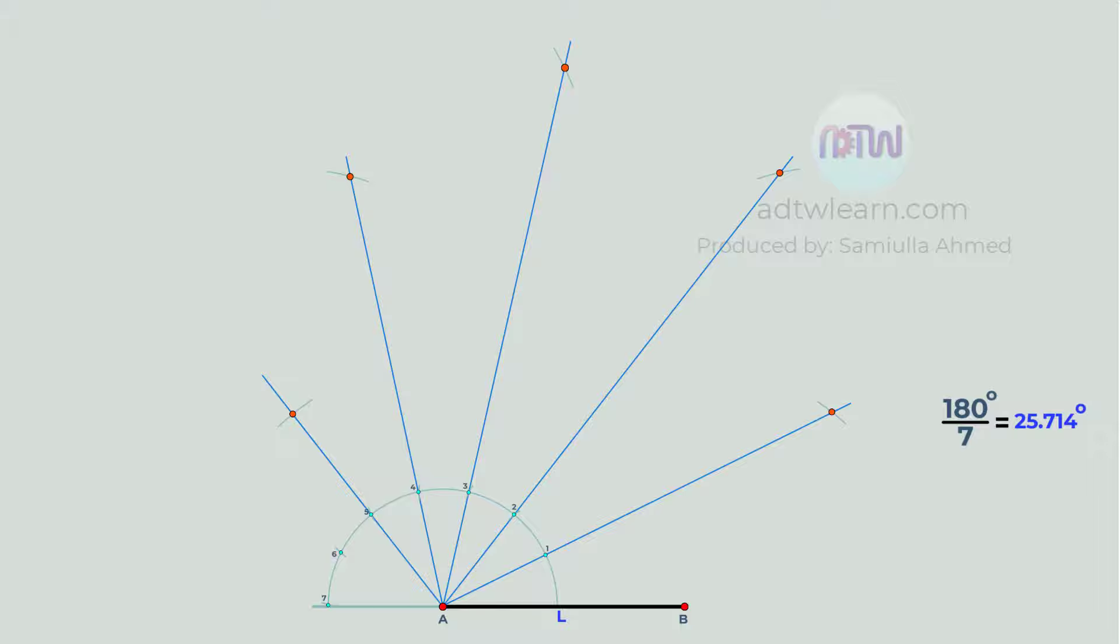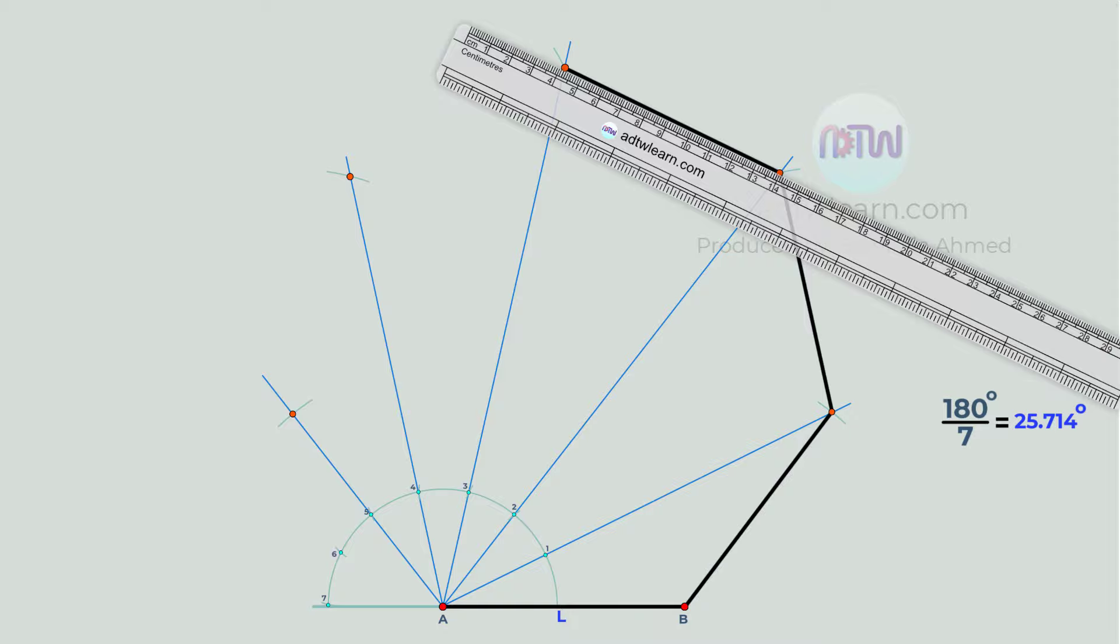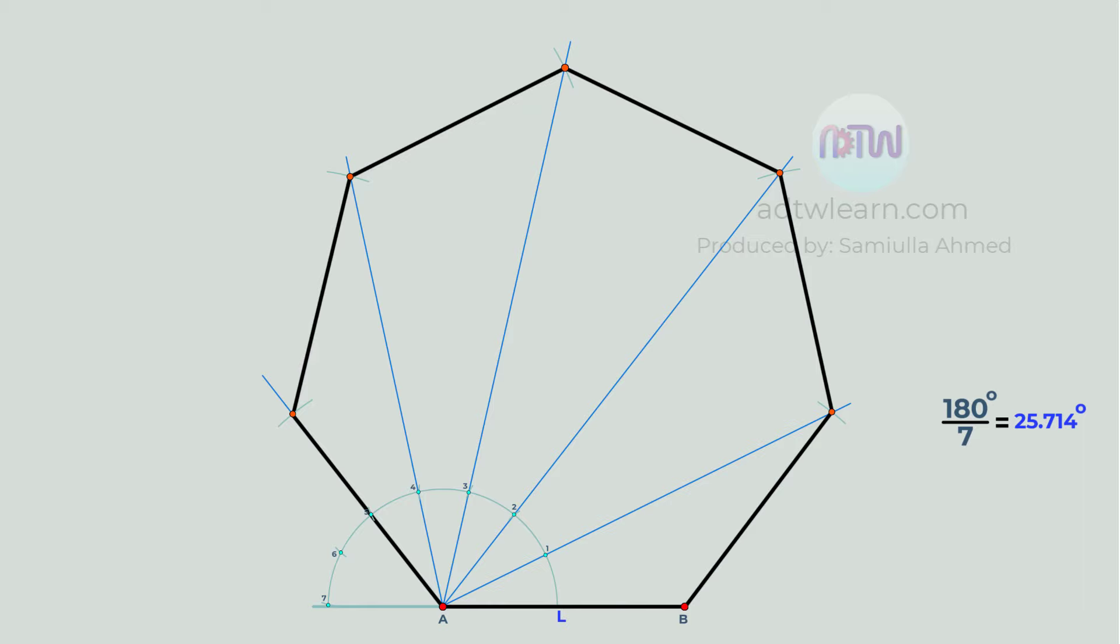These are the 7 vertices of our heptagon. Join these vertices with lines. This is our final heptagon.